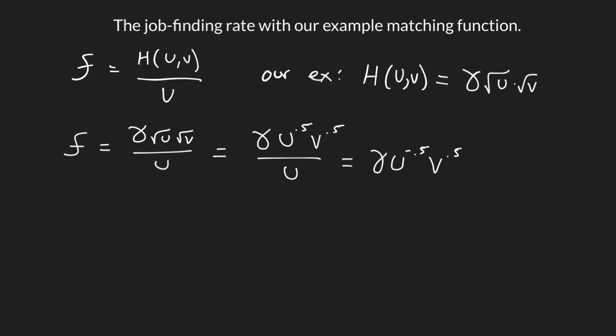The reason is 0.5 minus 1 equals negative 0.5. Now, with a negative exponent, we can throw that into the denominator. So we have gamma*v^0.5 divided by u^0.5.